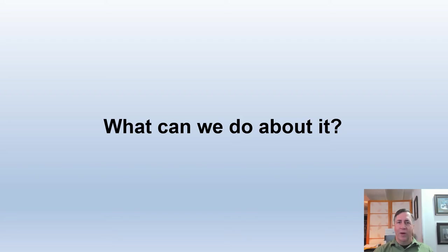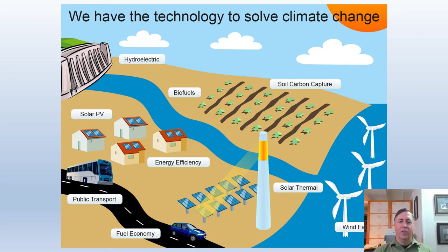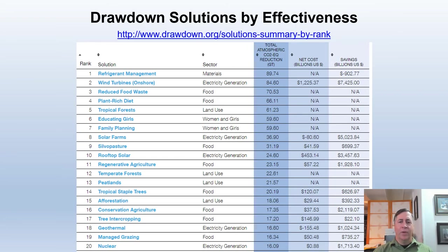So, what can we do about it? There are two basic types of responses to climate change. Mitigation means reducing the sources and enhancing the sinks of greenhouse gases to reduce the extent to which climate change happens. Adaptation is reducing the negative impacts of the change that does happen by adjusting natural and human systems to reduce the harm. We already have the technology to reduce climate change by replacing fossil fuels with renewable energy and capturing atmospheric carbon in plants and soils. Project Drawdown identified 80 different solutions to reduce greenhouse gas emissions or remove CO2 from the atmosphere, but no single solution can do the job — we have to consider all of them, and most of them would actually save money.